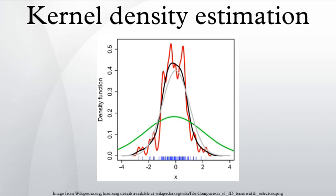Bandwidth selection. The bandwidth of the kernel is a free parameter which exhibits a strong influence on the resulting estimate. To illustrate its effect, we take a simulated random sample from the standard normal distribution. The gray curve is the true density.